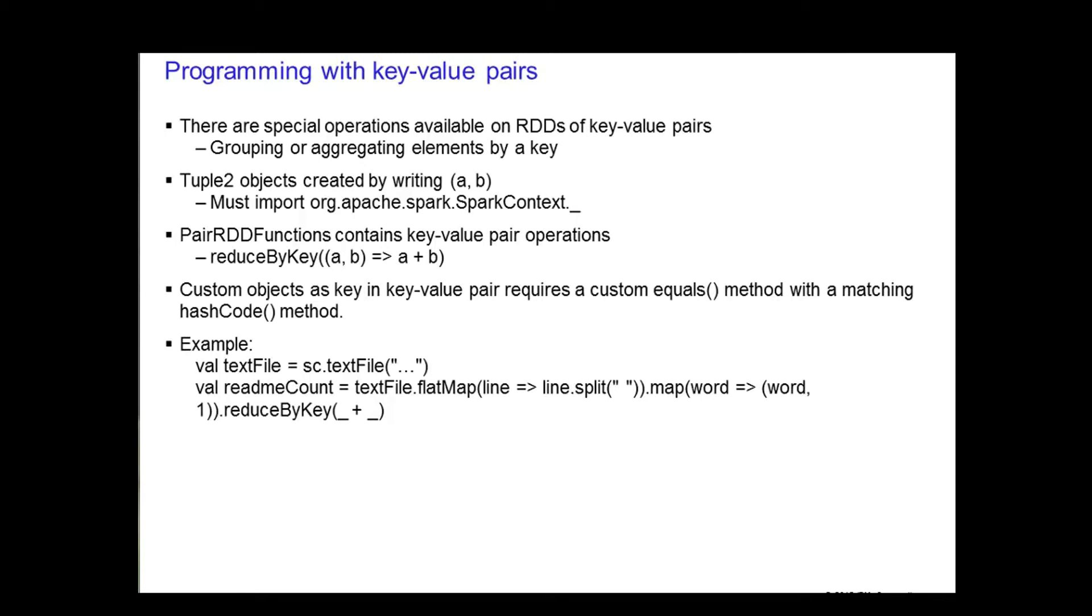I want to spend a little bit of time here to explain some of the syntax that you see on this slide. Note that in the first reduce by key example, with the a comma b right arrow to a plus b, that just means that for the function a and b as parameters, you want to add a plus b.